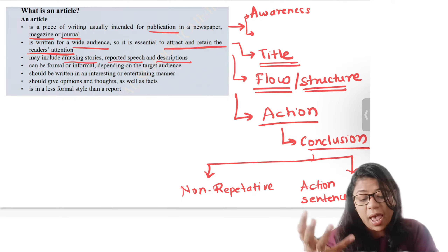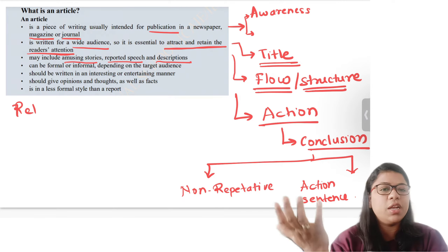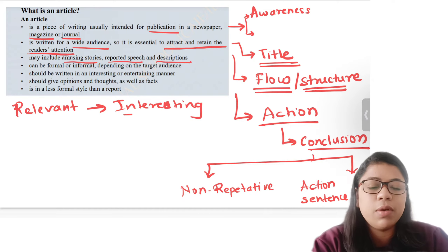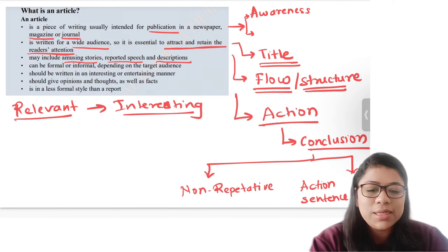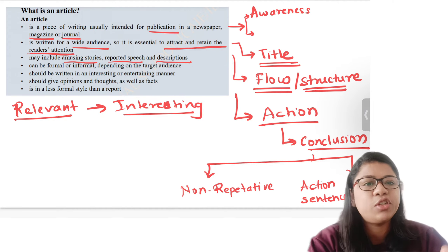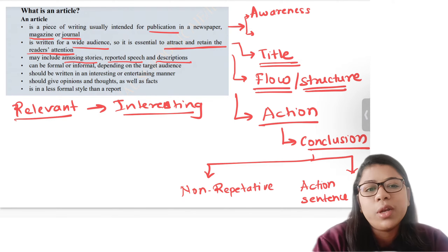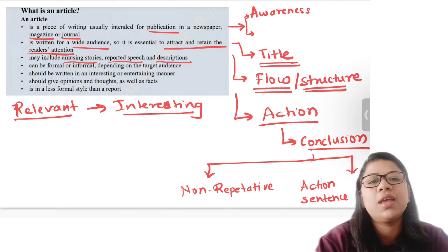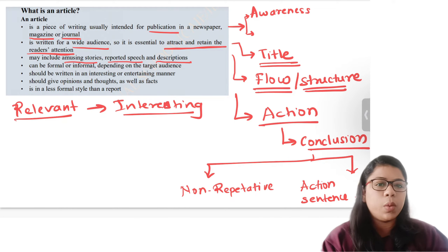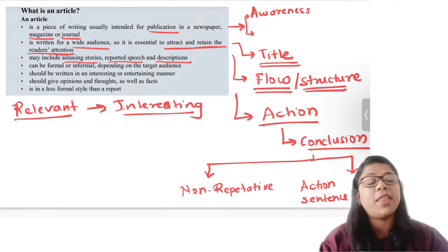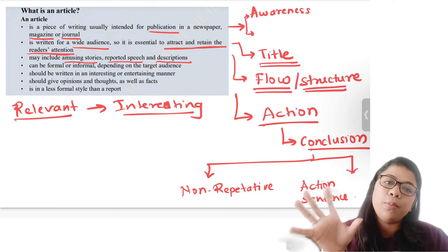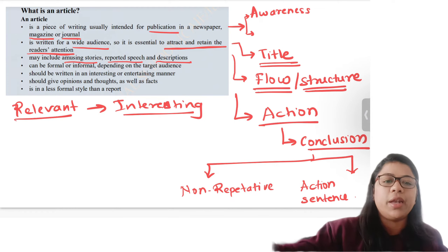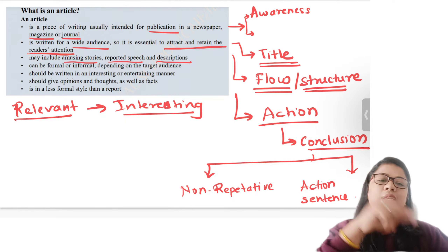Relevance and interesting always go hand in hand. You can see this with popular YouTubers — the extremely loved ones make their content extremely relevant to the audience they're targeting, which makes those audiences love them and watch their videos. The same applies to article writing. Make your writing relevant, and that relevance makes it interesting. You can do this by putting in good, amusing stories — horror, mystery, suspense — short interesting snippets rather than writing the whole article as one story.